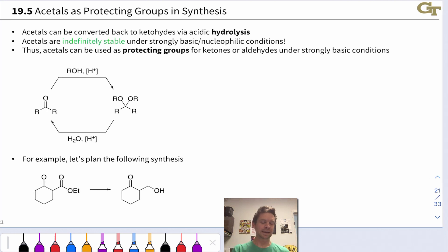They have two properties that allow us to do this. The first is that they are indefinitely stable under strongly basic or nucleophilic conditions. They simply do not react with strong bases or strong nucleophiles. Without the C=O pi bond, the electrophilic nature of the carbonyl carbon is essentially gone. Converting a ketone or aldehyde into an acetal makes it much less electrophilic.